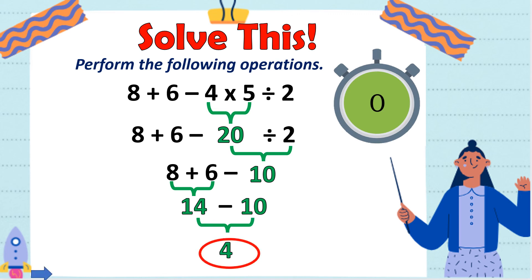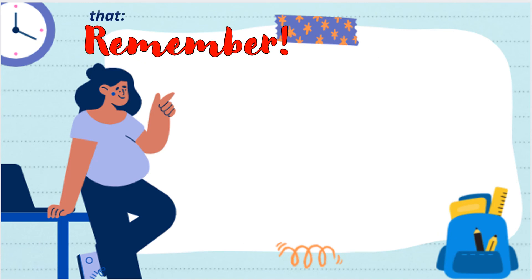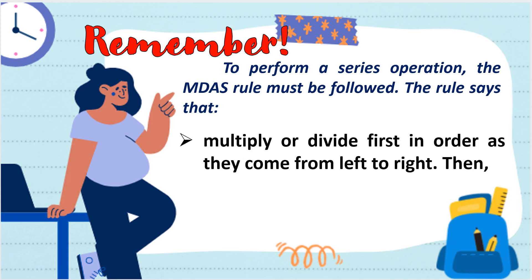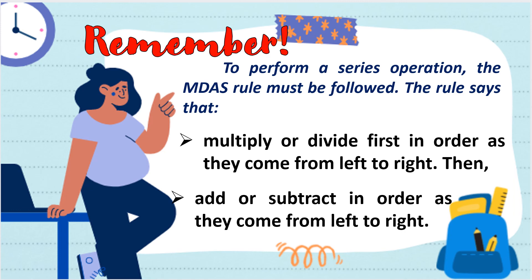Good job, kids! Remember: to perform a series operation, the M-DAS rule must be followed. M-DAS stands for multiplication, division, addition, and subtraction. The rule says that multiply or divide first in order as they come from left to right. Then, add or subtract in order as they come from left to right. That ends our video lesson for today. Once again, I am Mamsi — bye, kids!